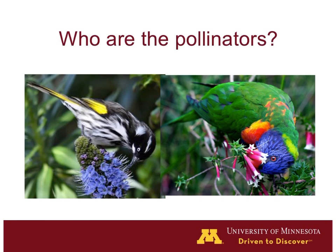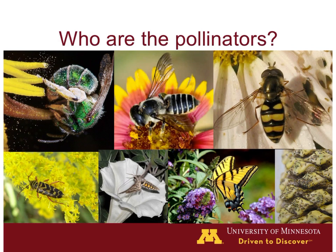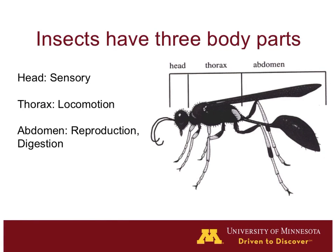There are a number of other interesting vertebrate pollinators — things like the honey possum, and a lizard is known to be a pollinator. But in reality, bats and birds make up the vast majority of vertebrate pollinators. As far as overall importance throughout the globe, the really important pollinators are the insects. When we look at plants throughout Minnesota, the vast majority are in fact pollinated by insects. So I want to talk a bit about their biology and their evolutionary history as well.